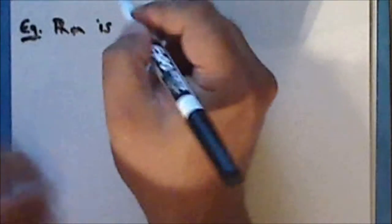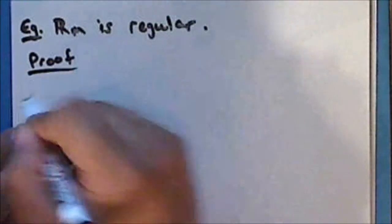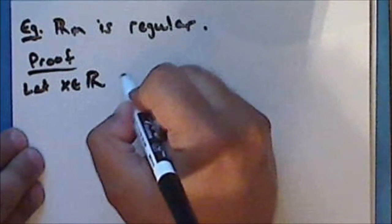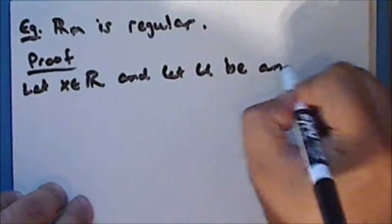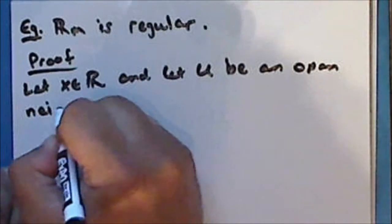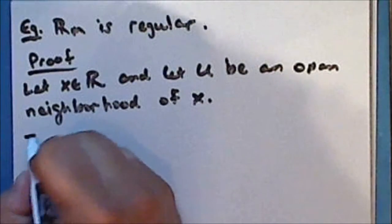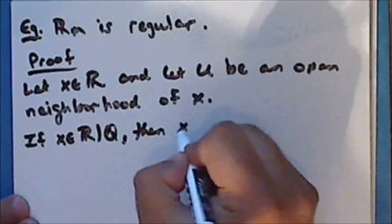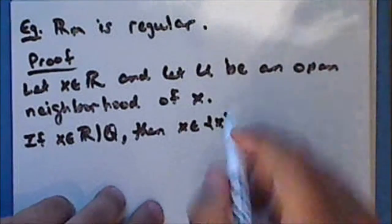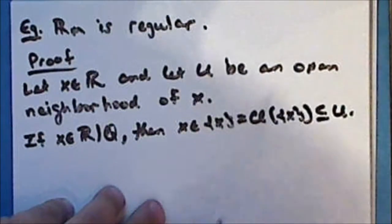Next, we will show that the Michael line is regular. Let x be a real number, and let u be an open neighborhood of the point x. If x is an irrational number, then x is in the singleton containing it, and the singleton is equal to its closure, and this is contained in u.